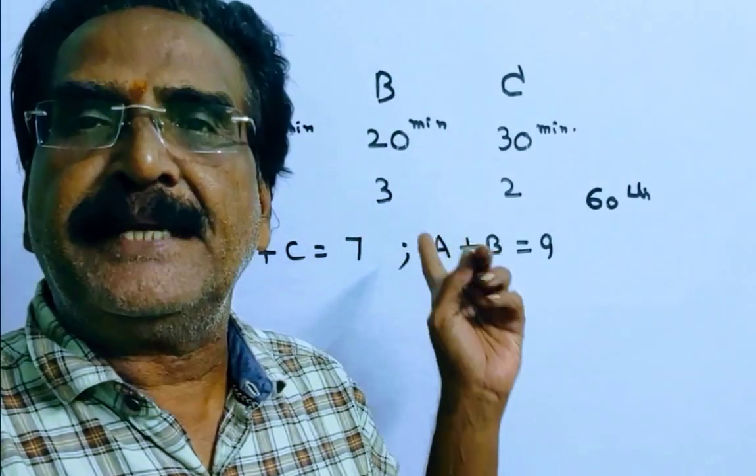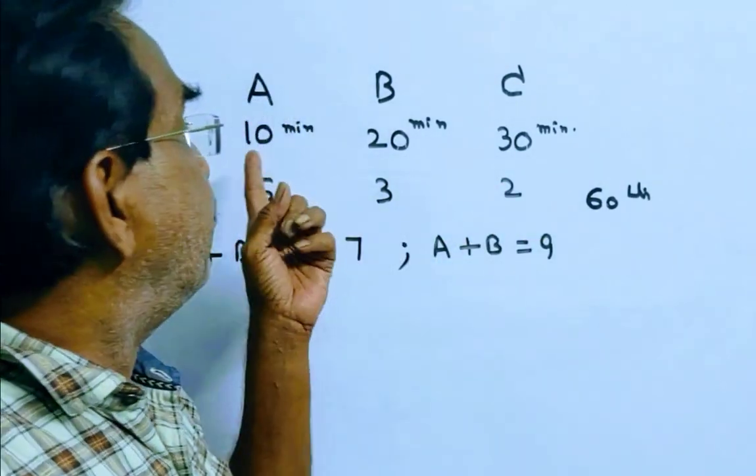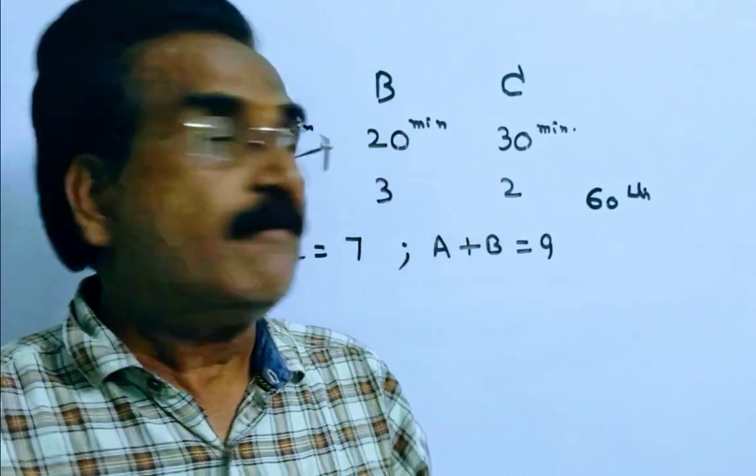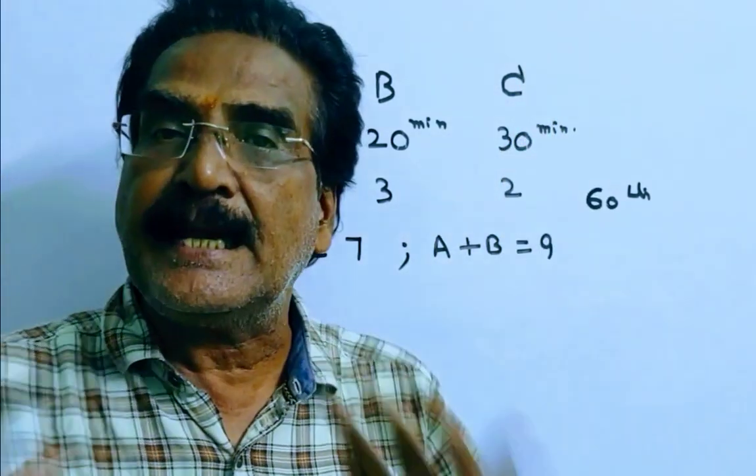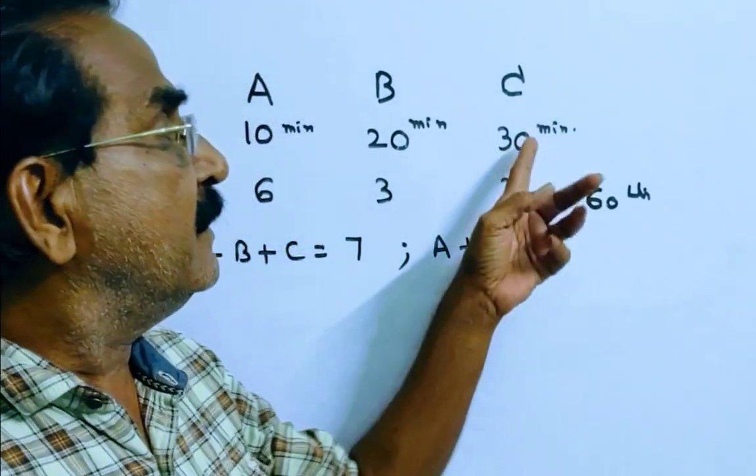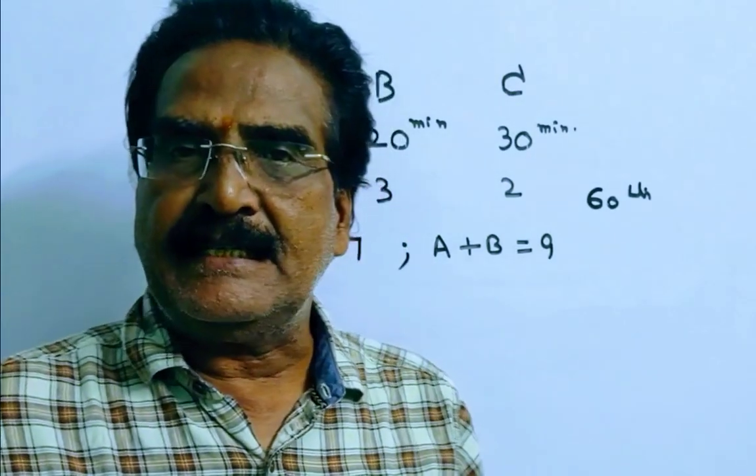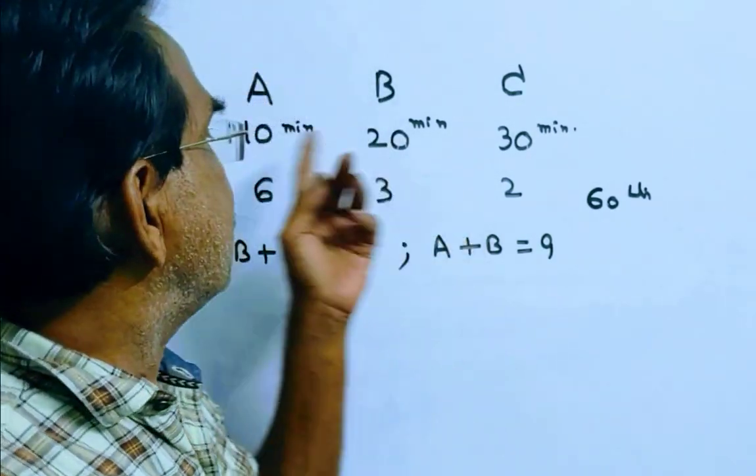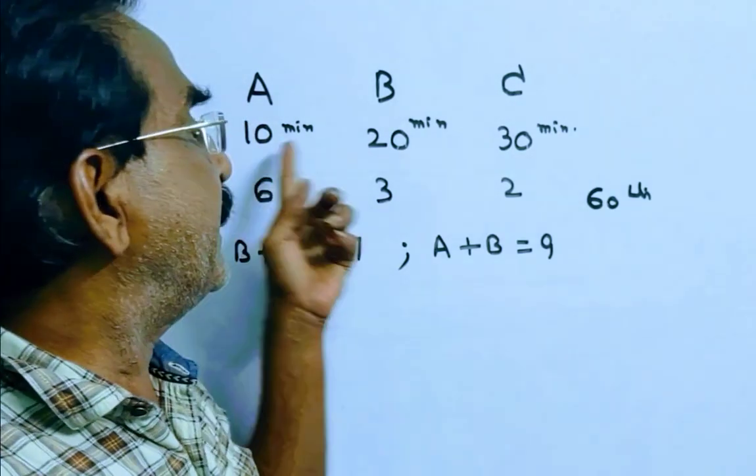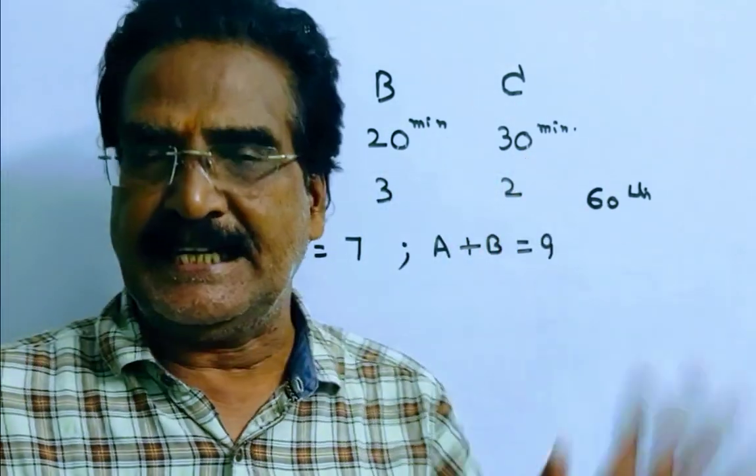See friends, pipes A and B can fill a tank in 10 minutes and 20 minutes respectively, while pipe C can empty the tank in 30 minutes. Friends, say the capacity of the tank 60 liters, that is the LCM of 10, 20 and 30, 60 liters.